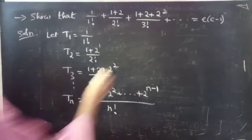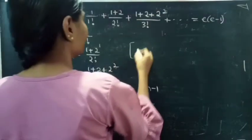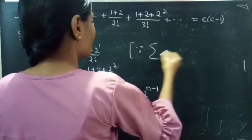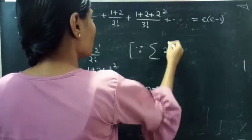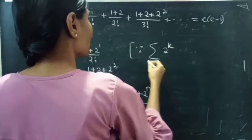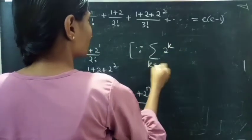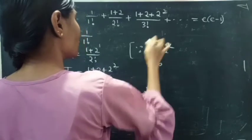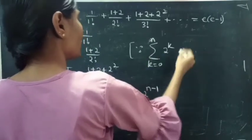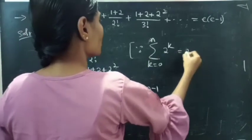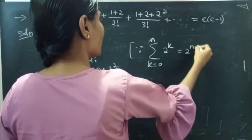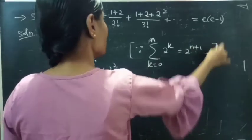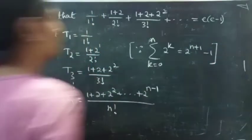We know that the sum of powers of 2, from k equals to 0 to n, equals to 2 power n plus 1 minus 1.